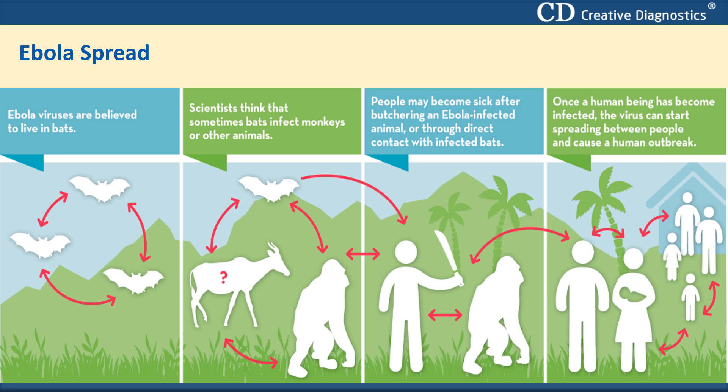Scientists think that sometimes bats infect monkeys or other animals. People may become sick after butchering an Ebola-infected animal, or through direct contact with infected bats. Once a human being has become infected, the virus can start spreading through human-to-human contact and cause a human outbreak.